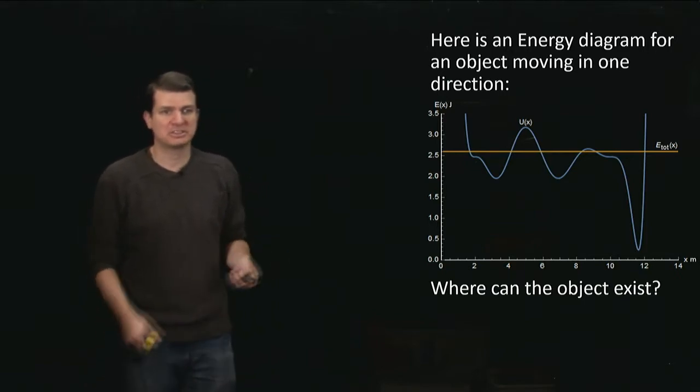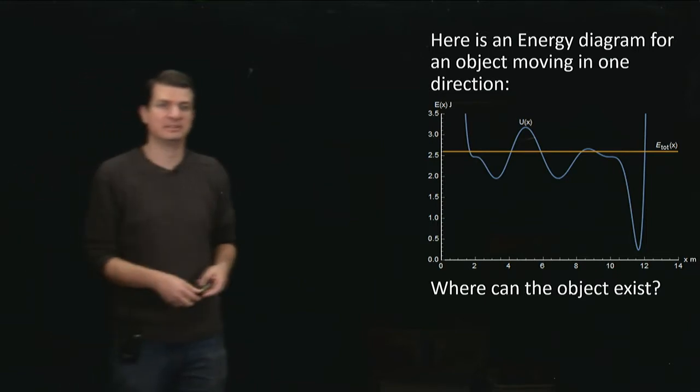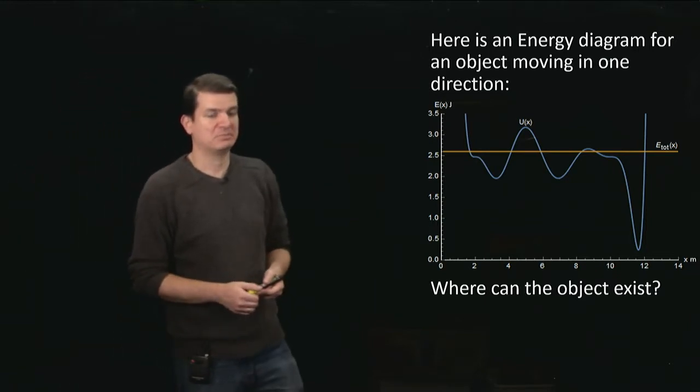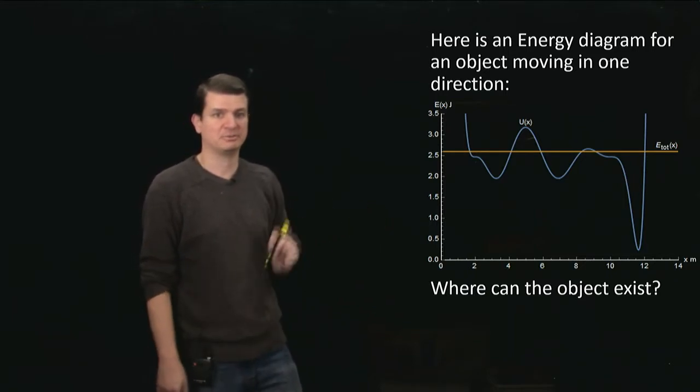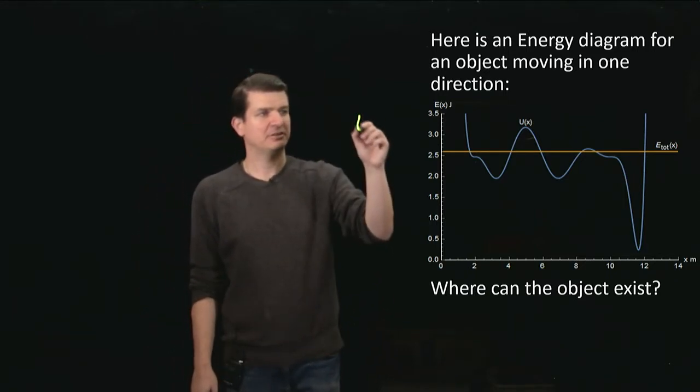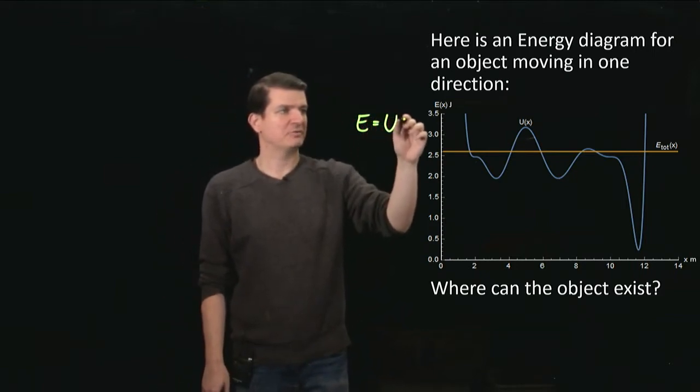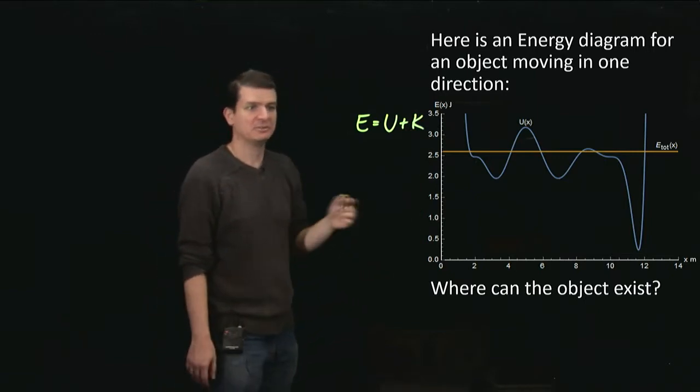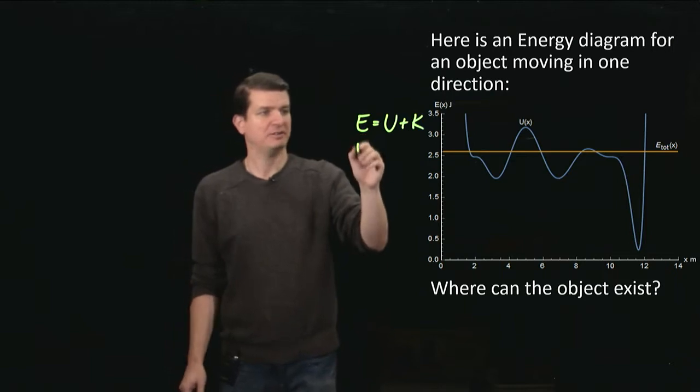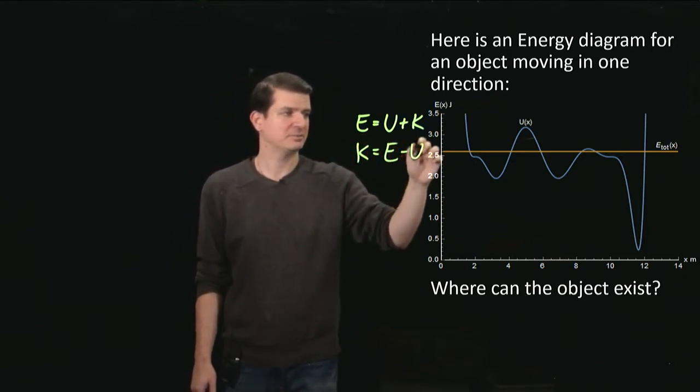So the first question that we have to address is this one asking us, where can the object possibly exist? And in order to understand that, we just need to think about the definition of what it is we're plotting. So this total energy, what is that? Well that's just the sum of the potential and the kinetic energies. So that's cool, we've got two of those things plotted, which means we can figure out the third. We can figure out that the kinetic energy is the energy minus the potential.